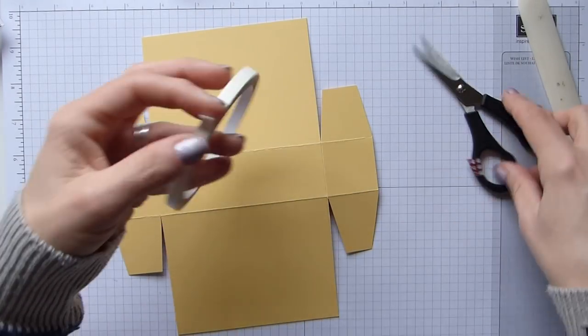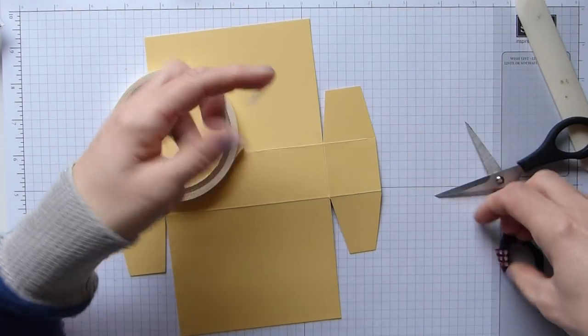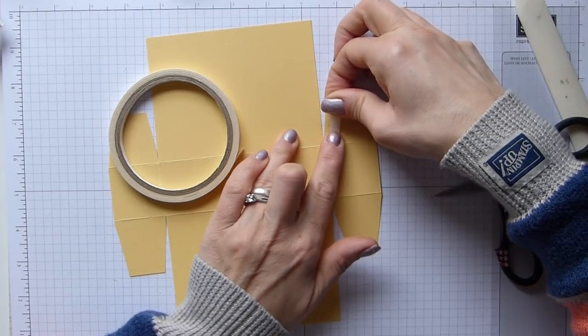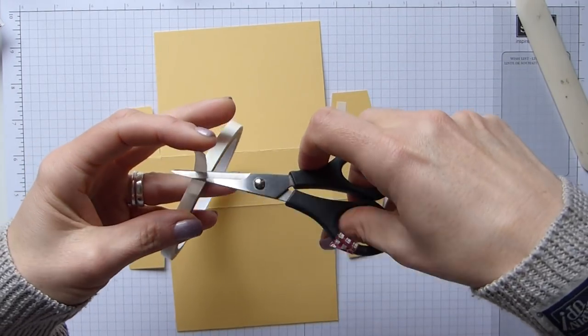Then we're quite simply going to add adhesive onto these bits and fold it up. Now again, as you may have guessed, I've left my wet glue elsewhere because I'm still on my swaps.